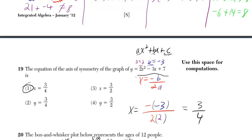And you plug into this formula, x is equal to negative b over 2a.